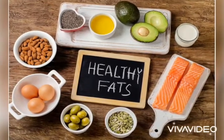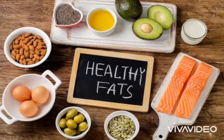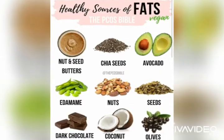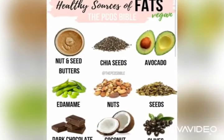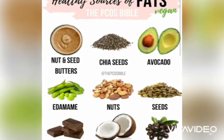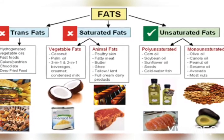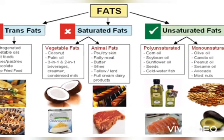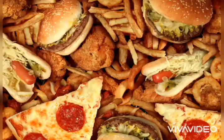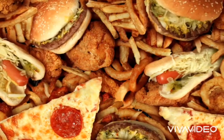The last nutrient is fats. There are healthy fats and bad fats. Healthy fats include nut and seed butter, avocado, nuts, seeds, and dark chocolate. The diagram shows trans fats, saturated fats, and unsaturated fats. Trans fats and saturated fats are not good for our body, but unsaturated fats are very good for our body.